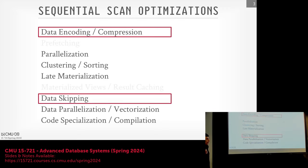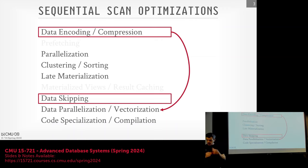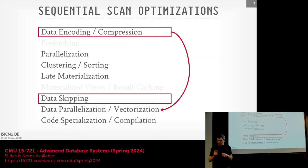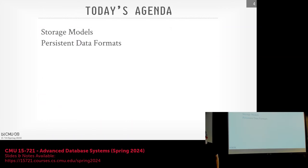So for this class, we're talking about data encoding and how we do data encoding will influence how we can do data parallelization and vectorization later on. We'll cover vectorization in more detail when we talk about query processing. Next lecture, you'll read the FastLanes paper, which is all about vectorization. We'll also see how to use vectorization for joins, sorting, and other things later in two weeks.